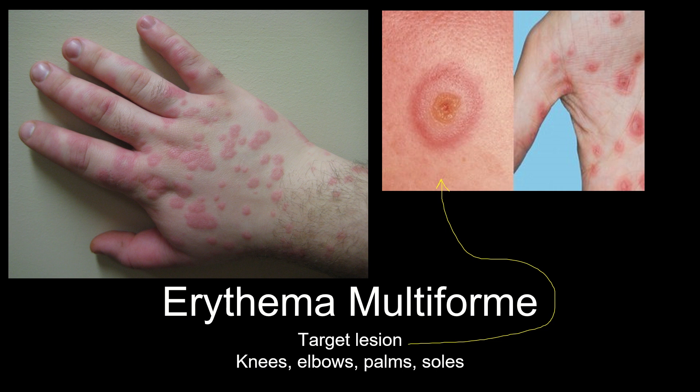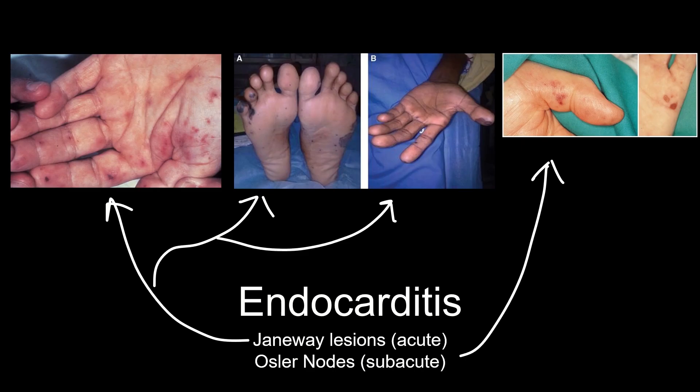Last of all we have endocarditis. We get Osler's nodes in the subacute form, which is caused by Strep viridans, and Janeway lesions in the acute form, caused by Staph aureus. Osler's nodes are painful pink nodules in the fingers, while Janeway lesions are painless macules on the palm and soles. Remember that Strep viridans attacks abnormal heart valves.